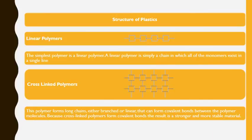We should know the structure of plastics. There are linear polymers and crosslink polymers. Plastics made of linear polymers have a simple chain in which monomers exist in a single line. In crosslink polymers, there are covalent bonds between the polymers — because of these covalent bonds they become very strong and stable.